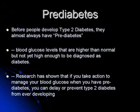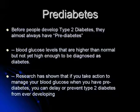Before people develop type 2 diabetes, they almost always have pre-diabetes. Pre-diabetes is when blood glucose levels are higher than normal but not yet high enough to be diagnosed as diabetes. Research has shown that if you take action to manage your blood glucose when you have pre-diabetes, you can delay or prevent type 2 diabetes from ever developing.